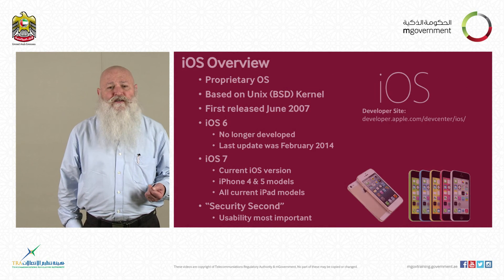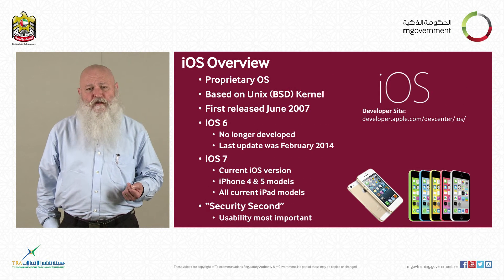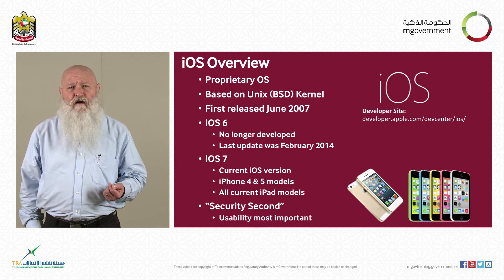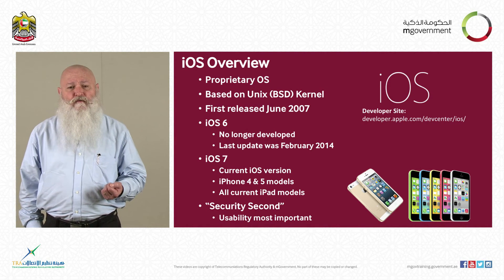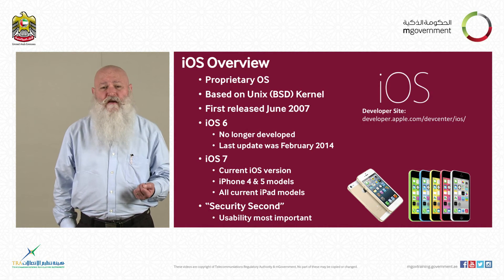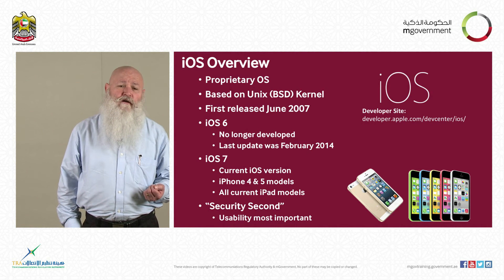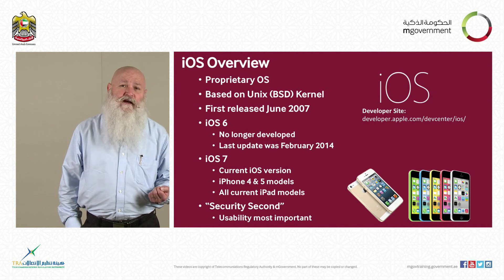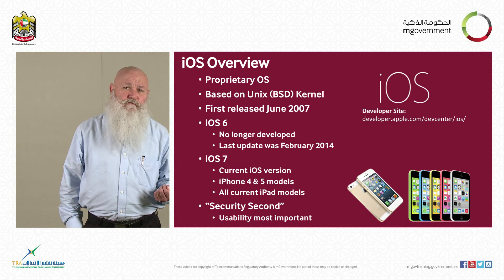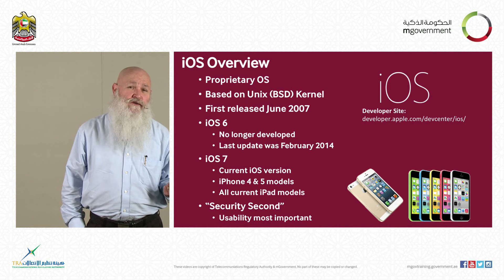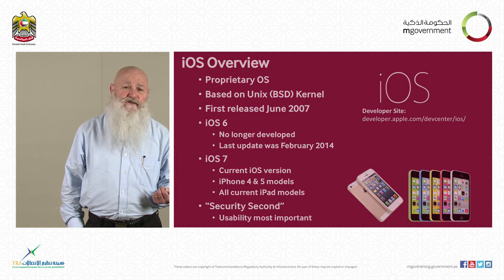The iOS or iPhone is also a proprietary operating system based on a BSD Unix kernel. It was first released in June of 2007, and the current version is iOS 8 — not 7 as this slide indicates. iOS 8 was released about a month ago. So this is a Unix-based operating system, but again, a consumer-based device, so security was not the primary design consideration.